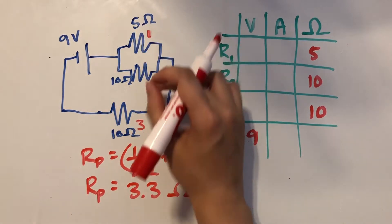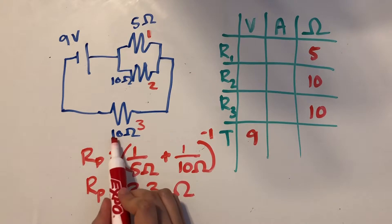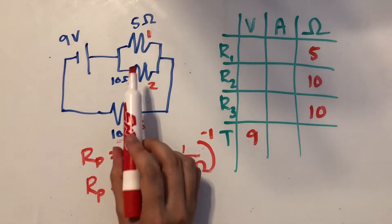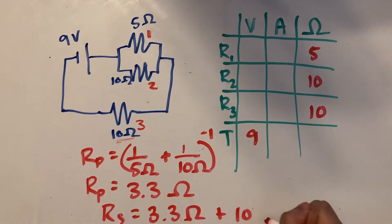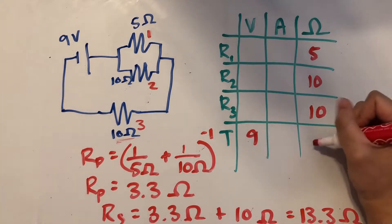And now we can add that to our resistance here, which is 10 ohms, because this and this are going to be in series. So resistors in series, it's going to be the first resistance plus the second one. And that gives us a total of 13.3 ohms. So we've got our first value.